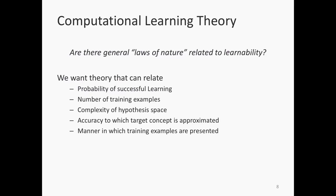The goal of computational learning theory is to come up with a statement of the form: you can learn a target concept drawn from this concept class efficiently, with this many examples, and I guarantee you'll get a classifier that is, say, 95% accurate — not 100% of the time, but 99 times out of 100.